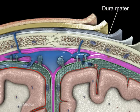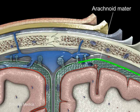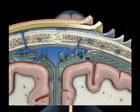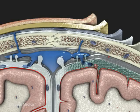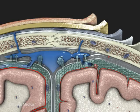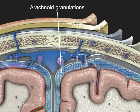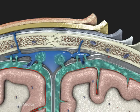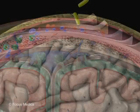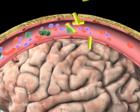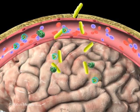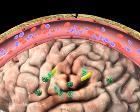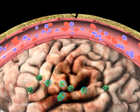The three meningeal layers are the dura mater, arachnoid mater, and the pia mater. Several arachnoid granulations can be seen when the sinus is opened — these are the spots of drainage. The inflammatory response of the CNS to the pathogen causes swelling of the brain with its associated complications.